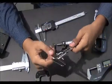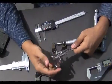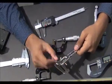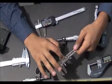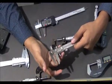This is the vernier caliper. This is the outside jaw and this is the inside jaw. And this is the main scale and this is the vernier scale.